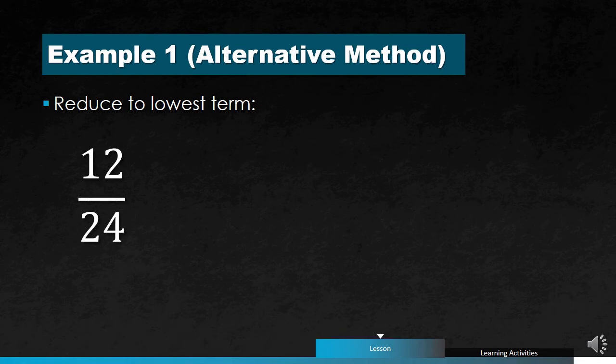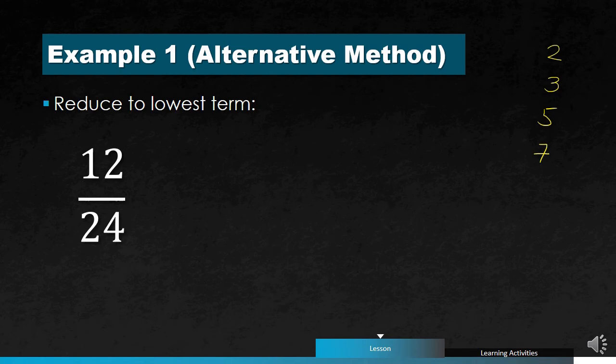Sometimes you can't immediately figure out the GCF of a number, so we can consider other options. We can use the numbers 2, 3, 5, and 7 and do continuous division until we get the lowest terms. For example, with 12 over 24 — if you can't immediately think of the GCF, you can divide continuously. Using 2, the easiest number to remember: 12 divided by 2 is 6, and 24 divided by 2 is 12.